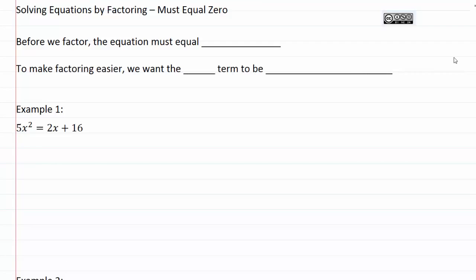Solving equations by factoring must equal zero. Before we factor, the equation must equal zero.